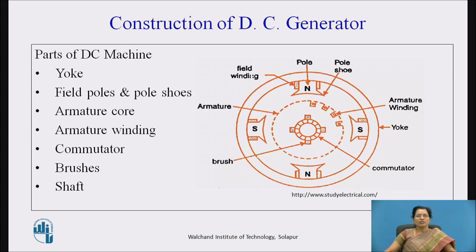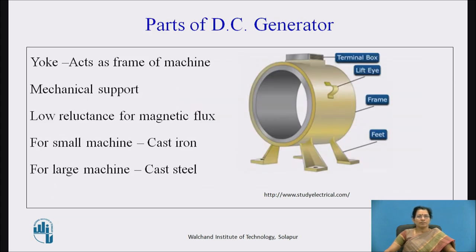Yoke is the outer part of the machine. It acts as a frame of the machine and provides mechanical support for field poles and field winding. It has low reluctance for magnetic flux. Cast iron is used for small machines and cast steel is used for large machines.